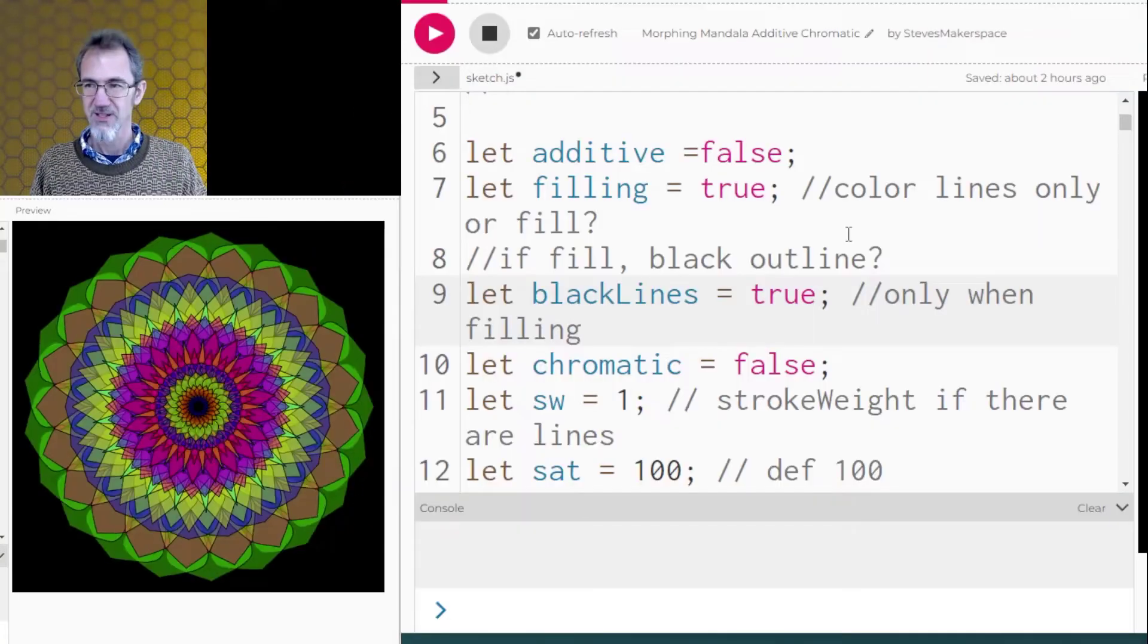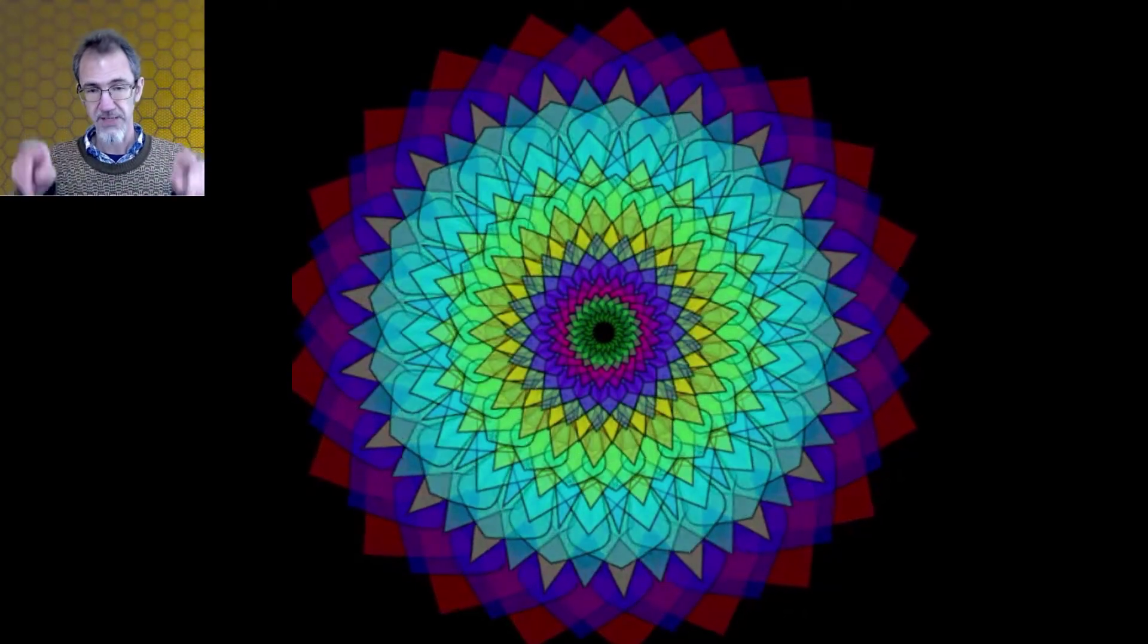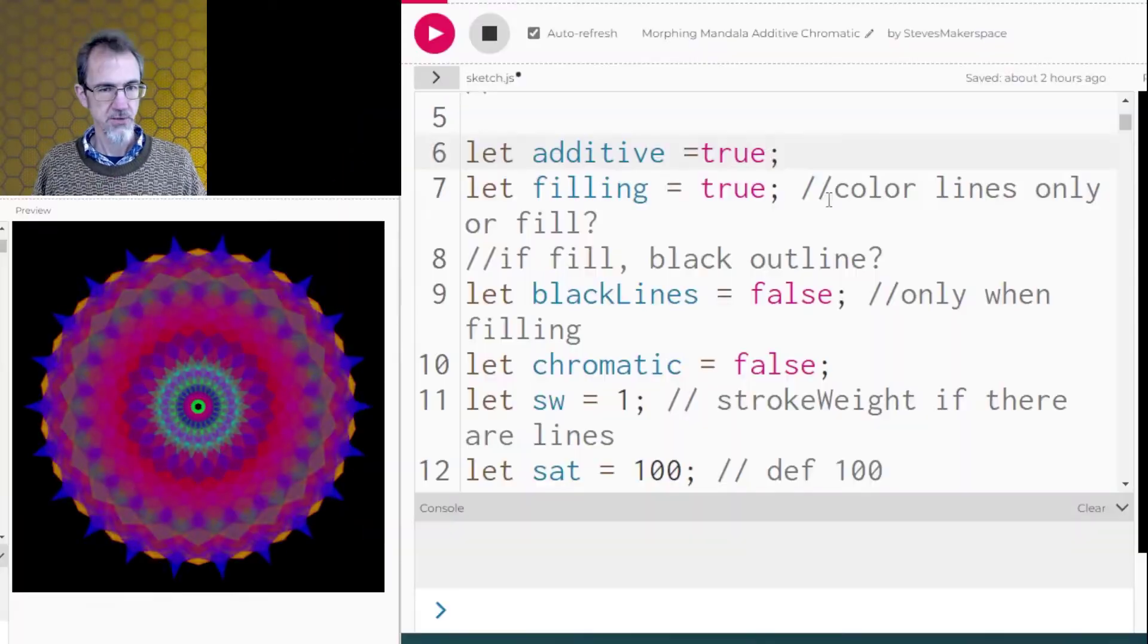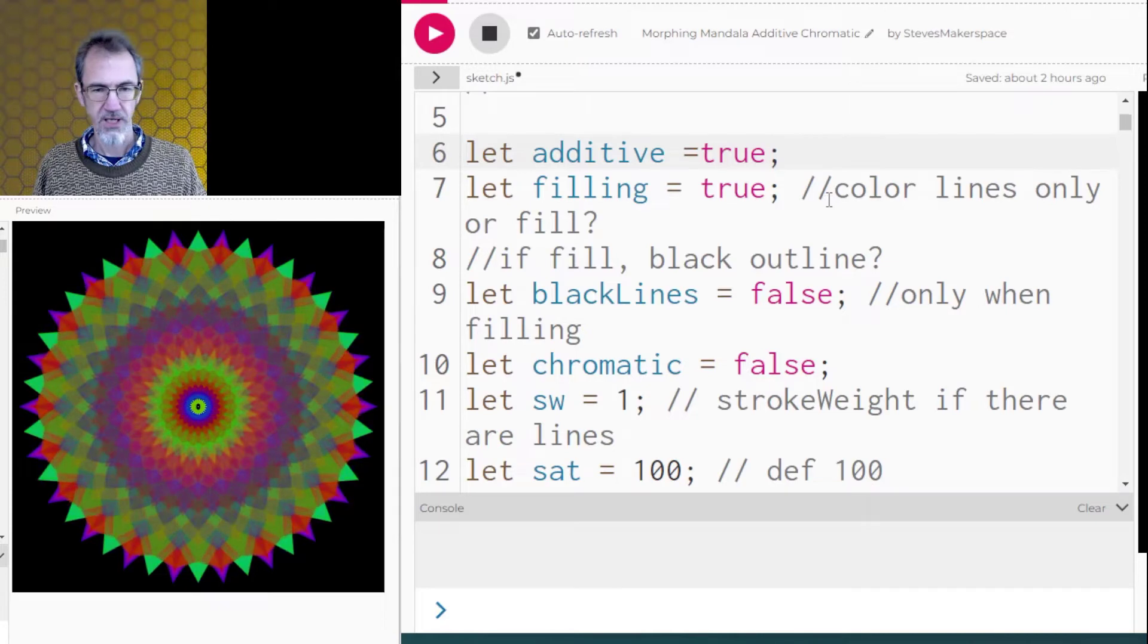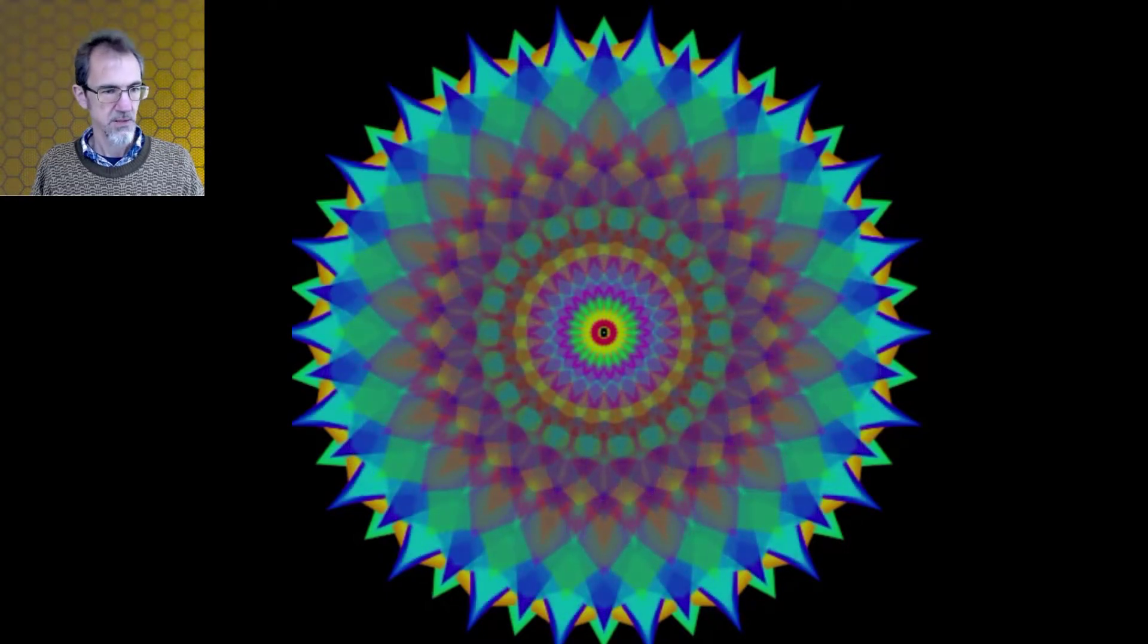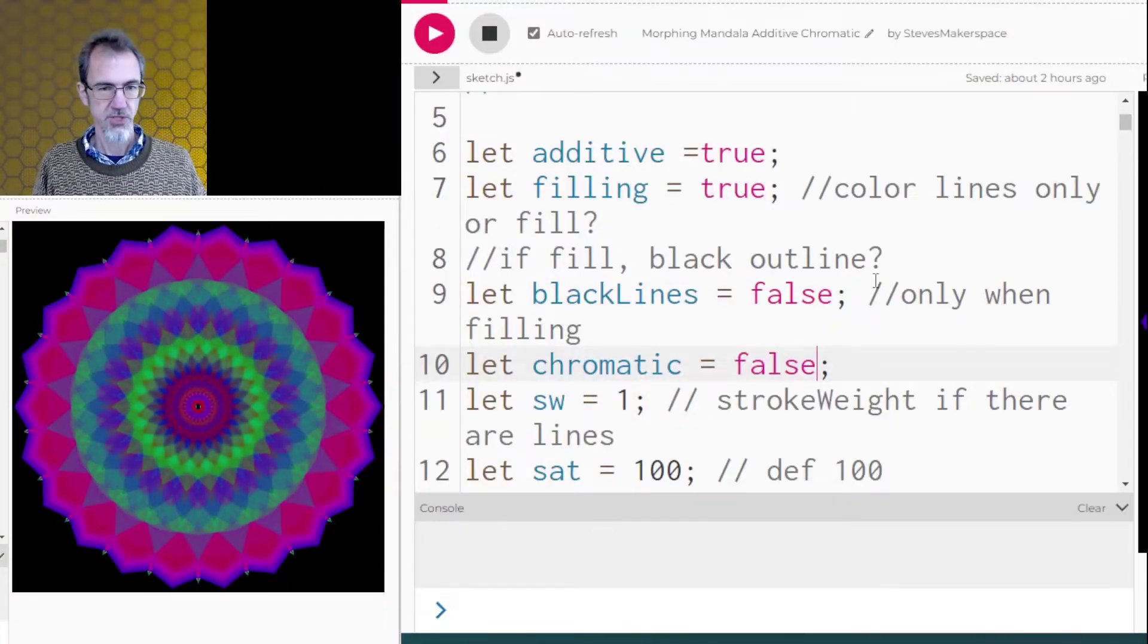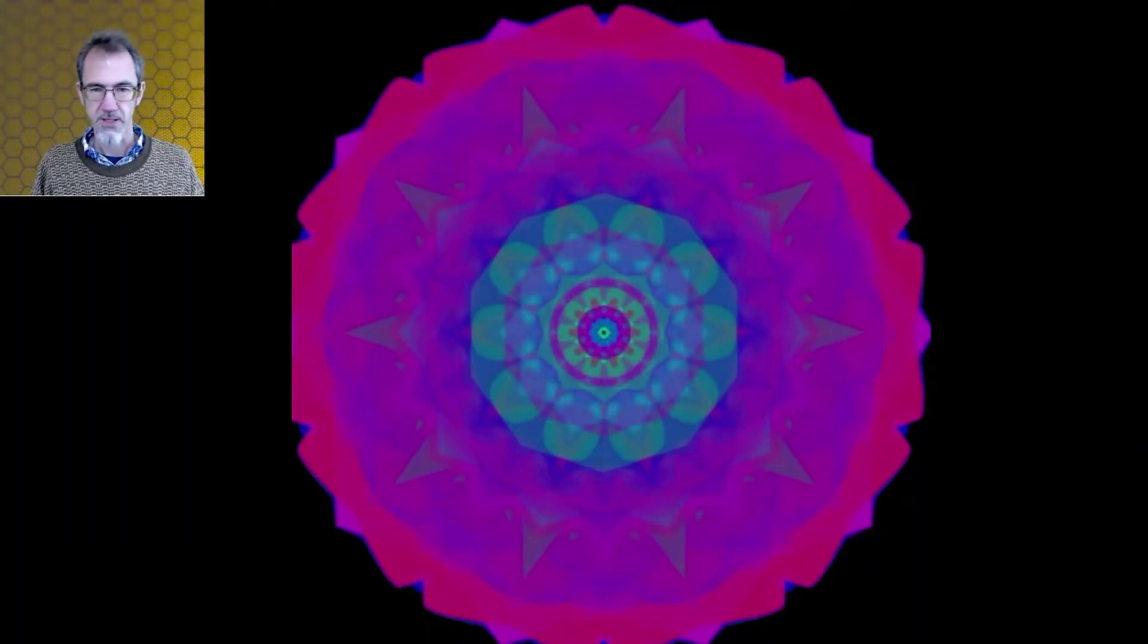Do a fresh one here. If I do black lines equals true, then I'm doing fill but with a black outline and it sort of makes a stained glass sort of look. So here's black lines off, additive on, and it's filling instead of just doing lines. So we get something like this. This is chromatic is false. Let's try changing chromatic to true.